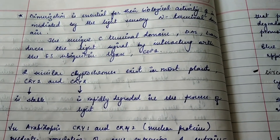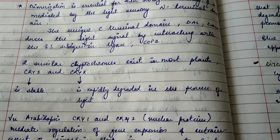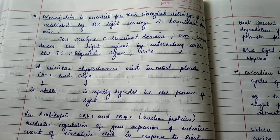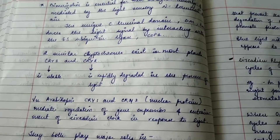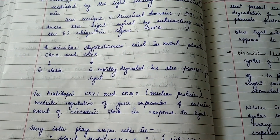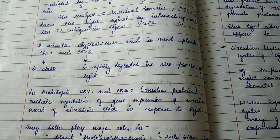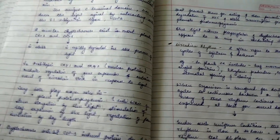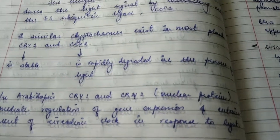The unique C-terminal DAS domain transduces the light signal by interacting with the E3 ubiquitin ligase COP1. Two similar cryptochromes exist in most plants: cry1 and cry2. Cry1 is always stable, while cry2 is rapidly degraded in the presence of light.